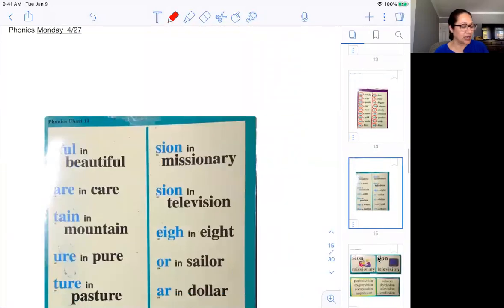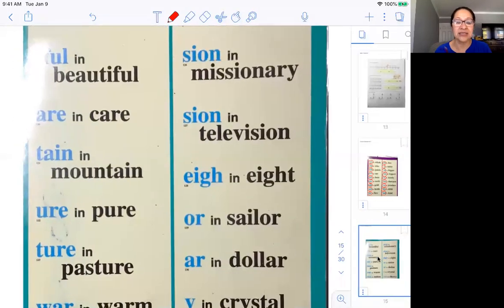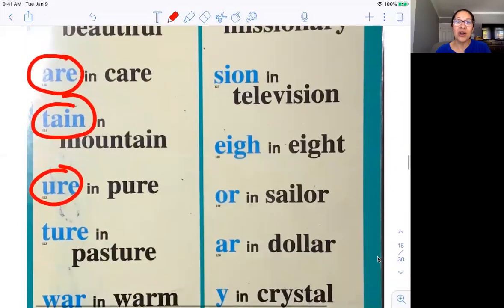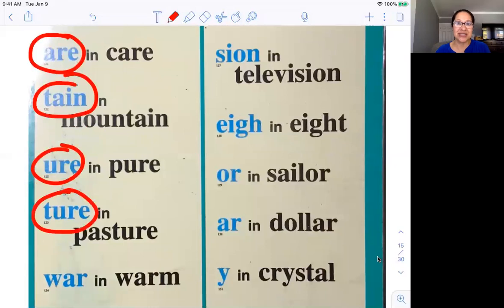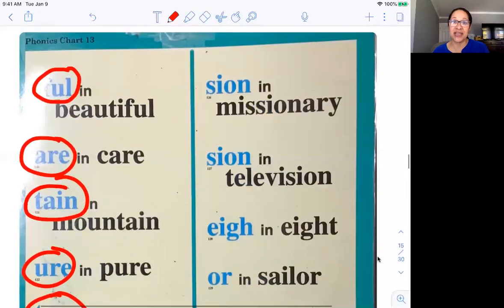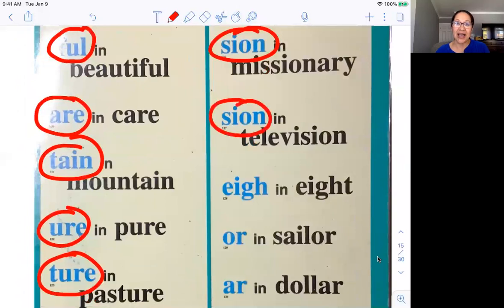Now let's go on to our next chart, and this is chart 13. We're going to scaffold along, and you are awesome at this. Full in beautiful, F-U-L. Air in care, A-I-R. Tain in mountain, T-A-I-N. Ure in pure, U-R-E. Ture in pasture, T-U-R-E. War in warm, W-A-R. Tion in nation, T-I-O-N. Sion in missionary, S-I-O-N. Sion in television, S-I-O-N.